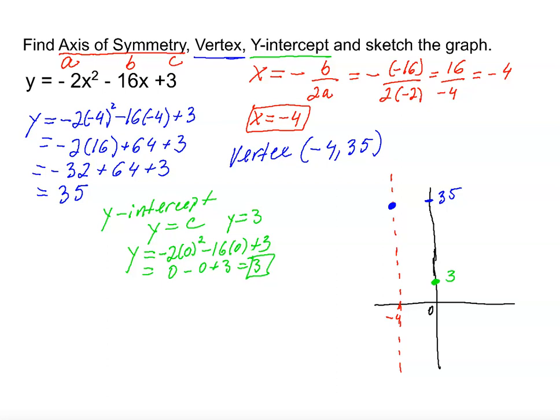And now we want to sketch the graph. Since we have a y-intercept over here and then we have a vertex, you also want to make sure that this graph goes through the y-intercept. And then, how would you know whether the graph or parabola opens up or down?